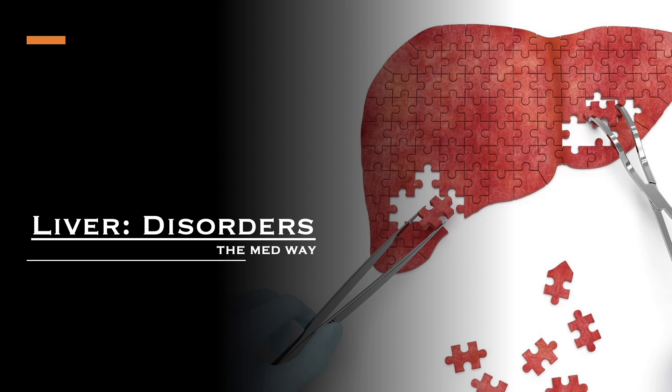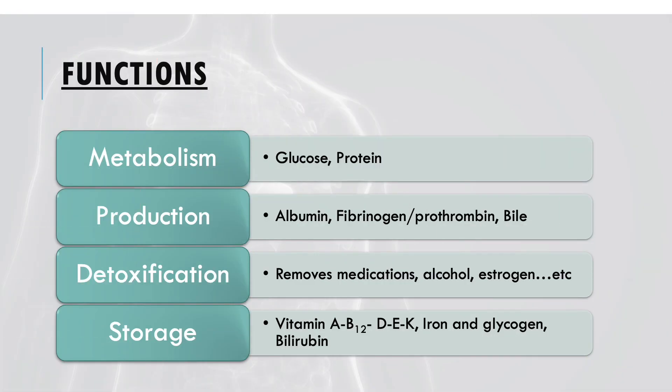The liver functions to metabolize glucose — excessive amounts of glucose are stored as glycogen, and the body uses this stored glycogen when needed. Protein is also metabolized in the liver, and a byproduct of protein breakdown is ammonia. Ammonia converts to urea, and if there are any liver abnormalities, a buildup of ammonia can cause cognitive decline, so we give lactulose to get rid of excess ammonia.